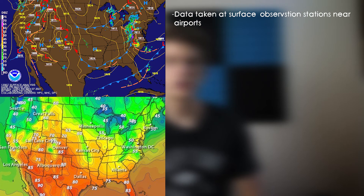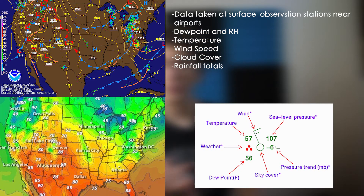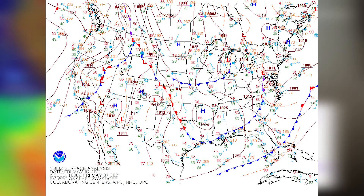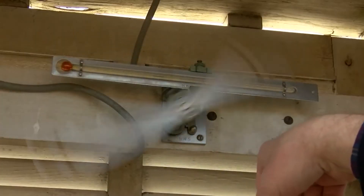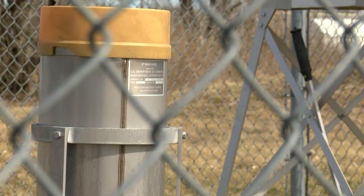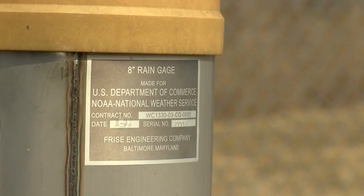I'm going to go through the seven charted pressure surfaces and the most useful data available on each. First is the surface map, which plots all the weather data taken at surface weather stations, usually near airports. This includes data like air temperature, wind speed, dew point, relative humidity, cloud cover, rainfall totals, and many others. It allows us to identify surface highs and lows as well as warm and cold fronts, and is useful for observing current conditions on the ground anywhere in the US.